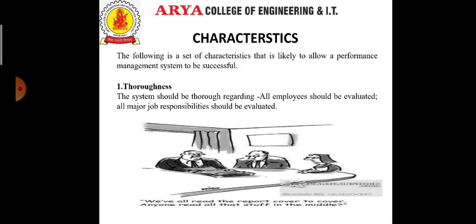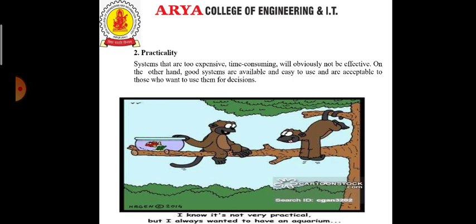The first characteristic is thoroughness. The system should be thorough — all employees should be evaluated on all dimensions, meaning all major job responsibilities should be evaluated across the entire review period, not just the few weeks or months before the review. Both positive aspects and those needing improvement should be evaluated in the performance management appraisal process.